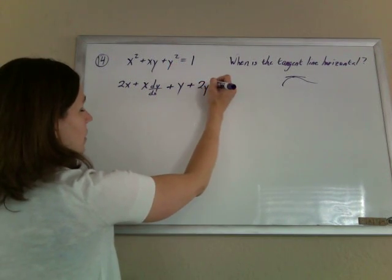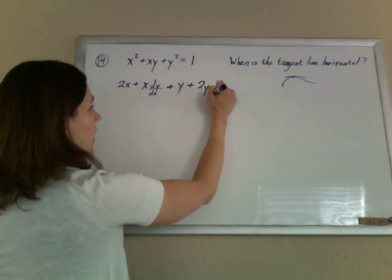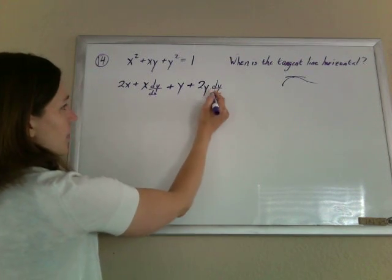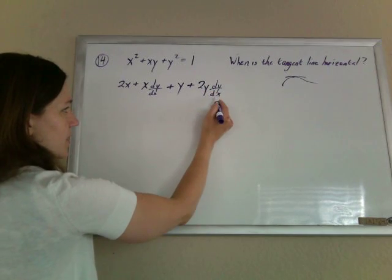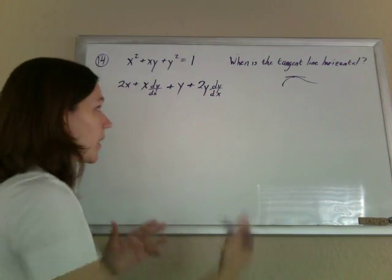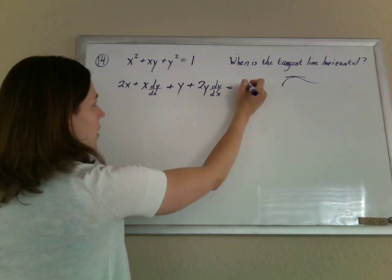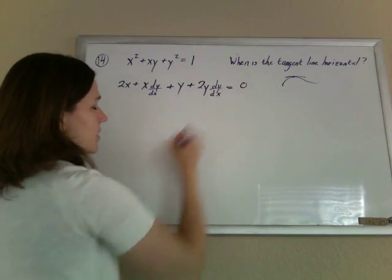Taking the derivative of this y, this is 2y dy dx. Again, chain rule. Derivative of the inside is dy dx. Every time you take the derivative of y, tap on an extra dy dx.